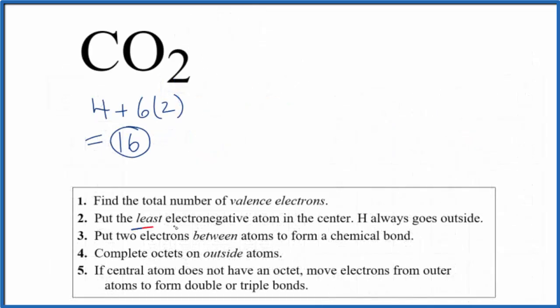We'll put the least electronegative atom at the center of our Lewis structure. That's the carbon. So we have our carbon, and then we have the two oxygens. They'll go on either side. We'll put two electrons between atoms. That's going to form our chemical bond. So we'll put two here, and then another two here. Now we have the oxygen and the carbon atoms bonded.